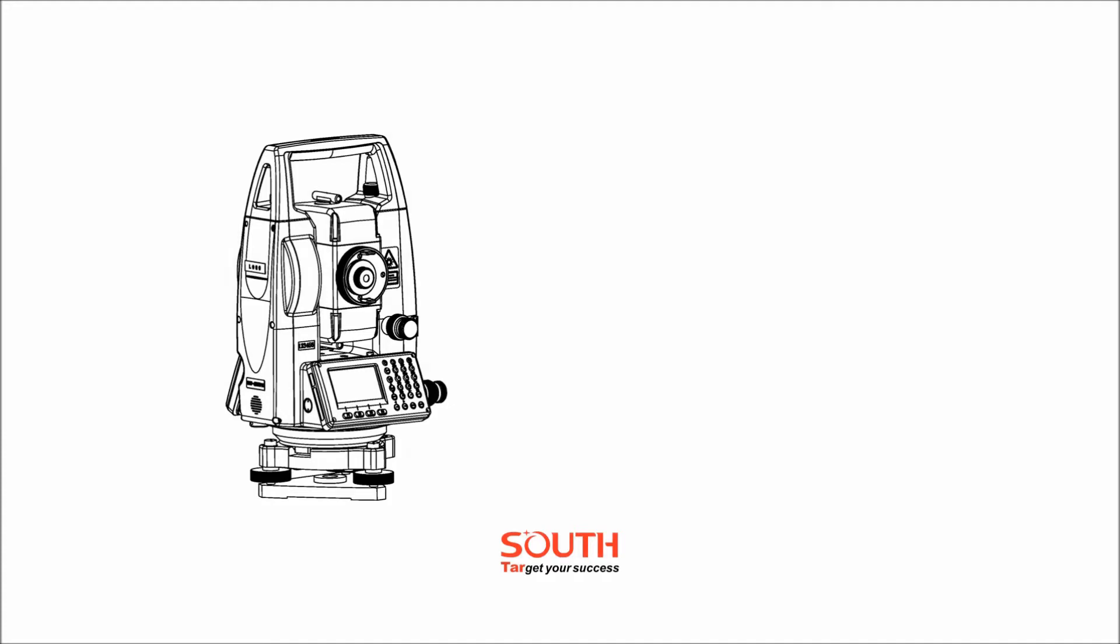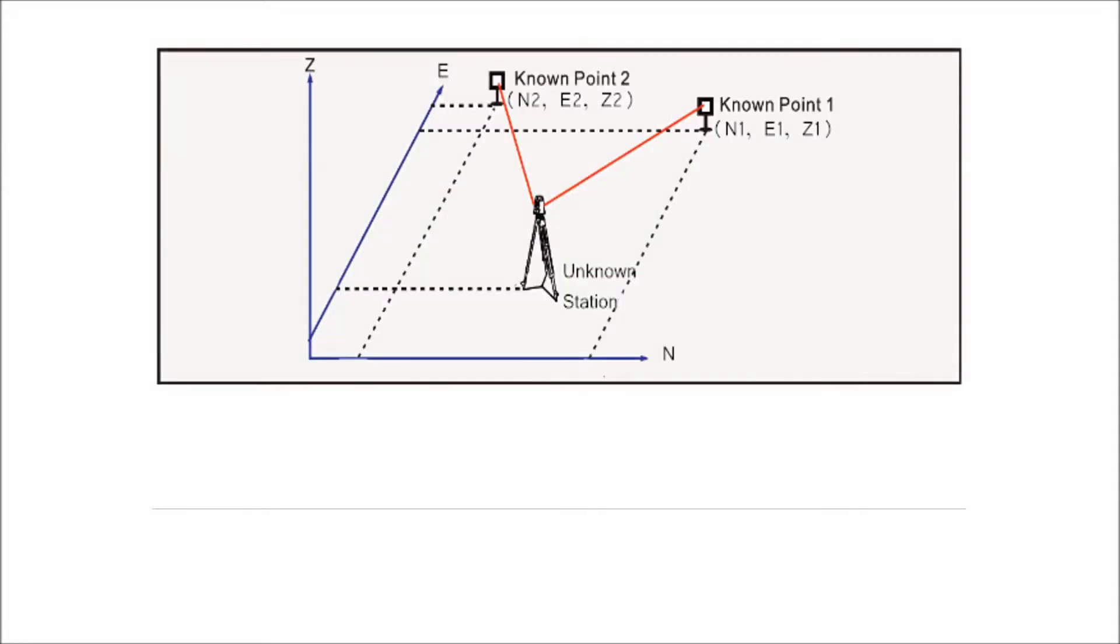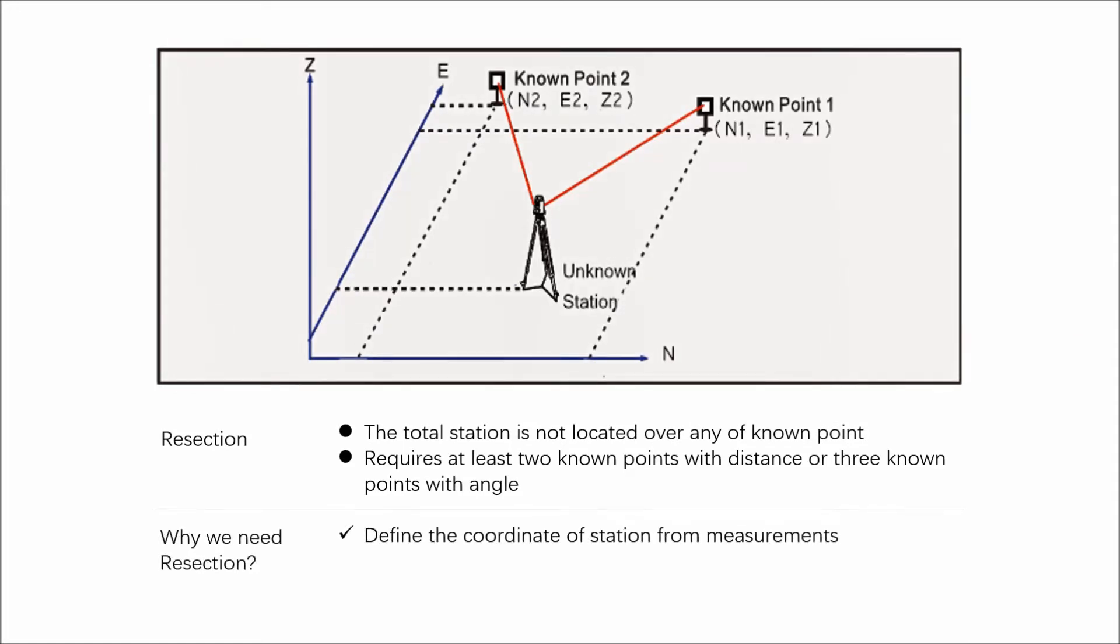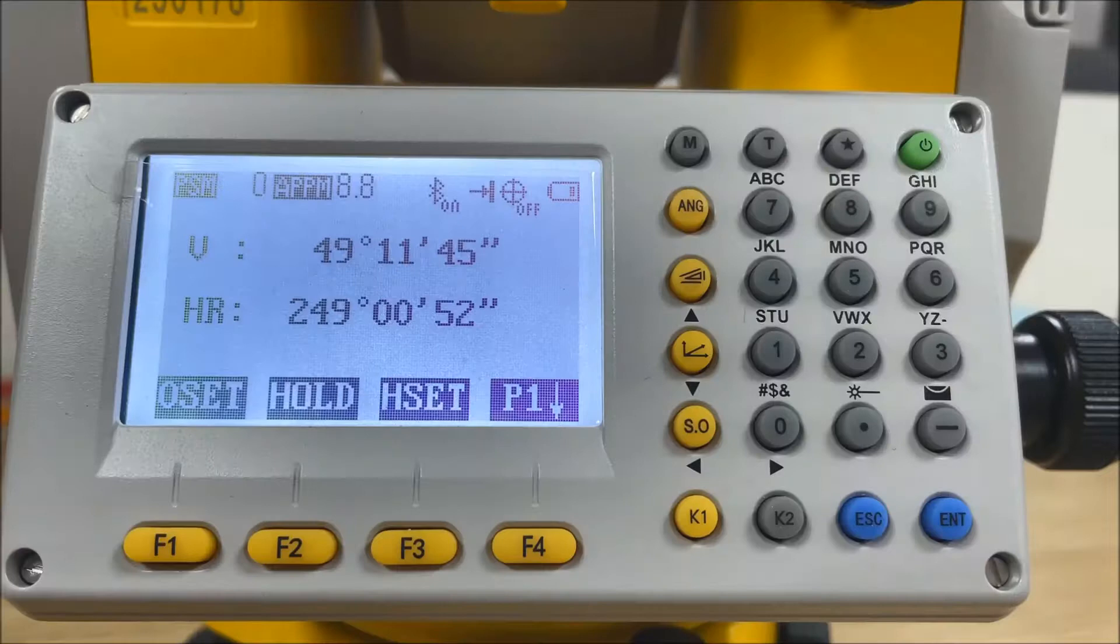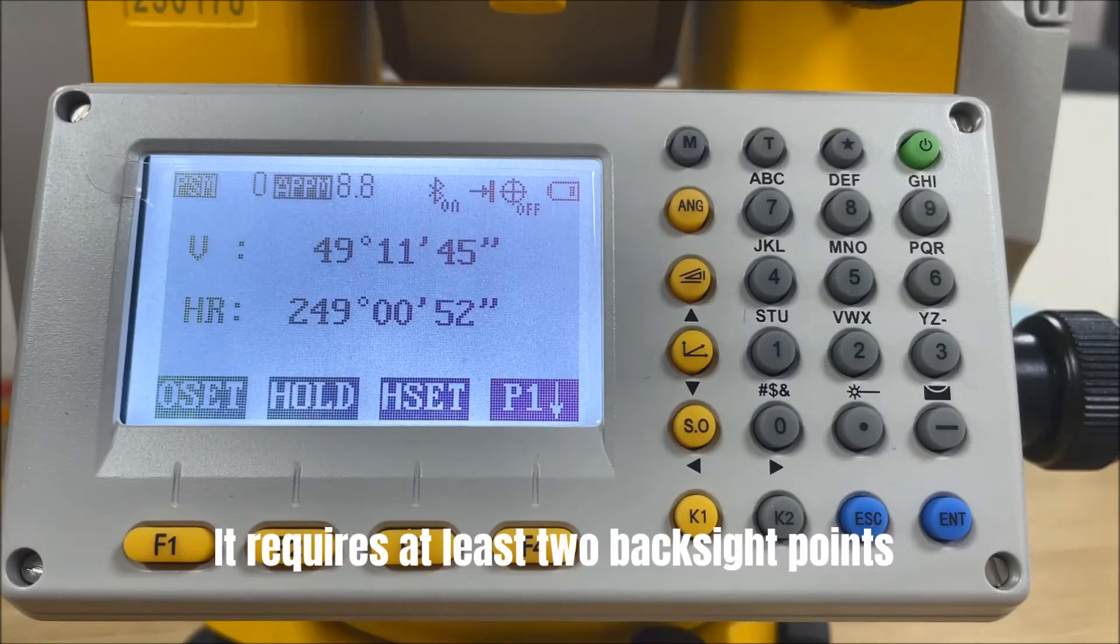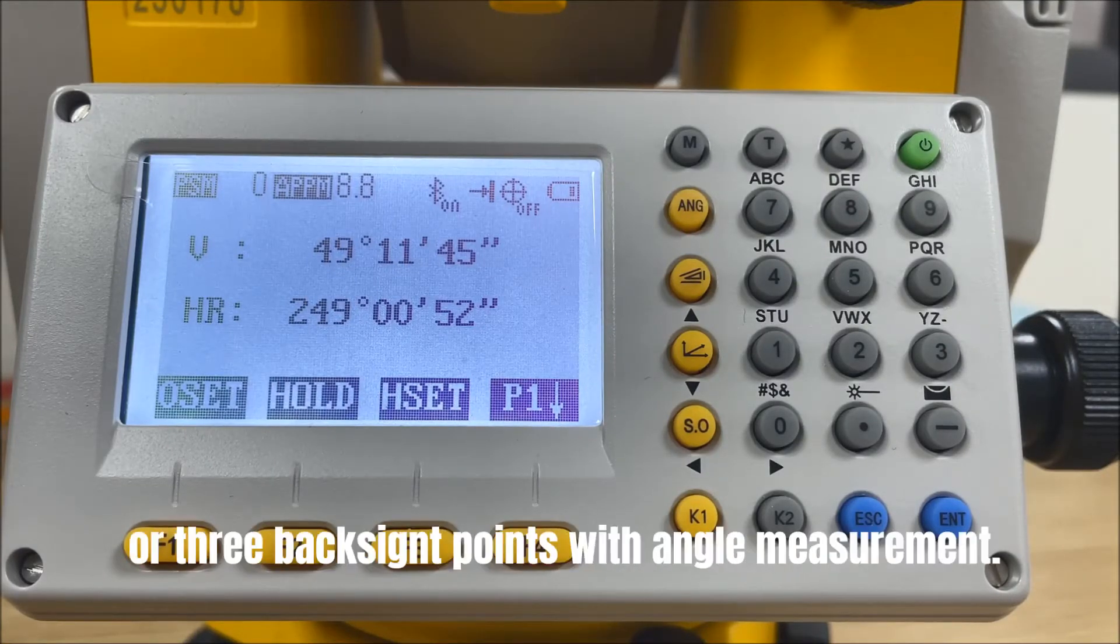This video will give an overview of how to set up a NTS-332 R10 total station using resection method. When the total station is not located over any of known point, resection helps to define the coordinate of station from measurements. It requires at least two backside points with distance measurement or three backside points with angle measurement.